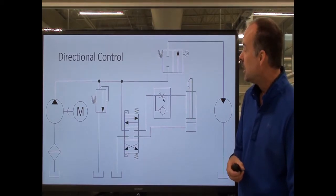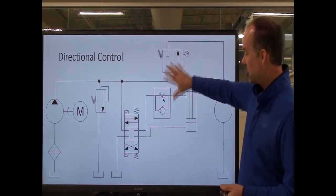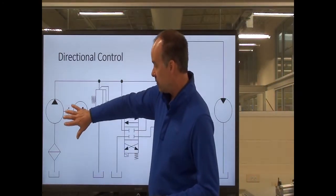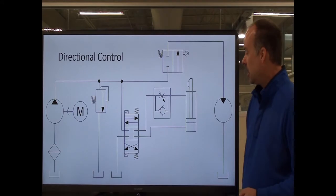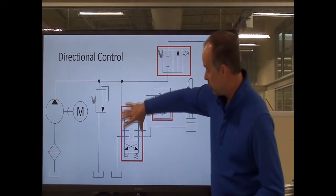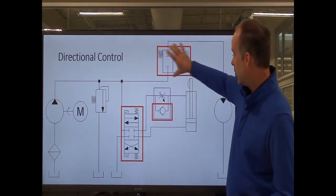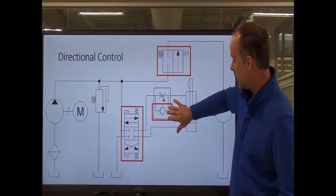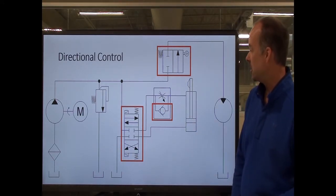If you remember from lesson one, here's our schematic symbol again. Last lesson we covered the hydraulic pump area. This lesson we're going to cover the directional control. What I've got here is a directional control valve, another directional control valve up here, and here I've got a check valve. We're going to delve into these just a little bit deeper.